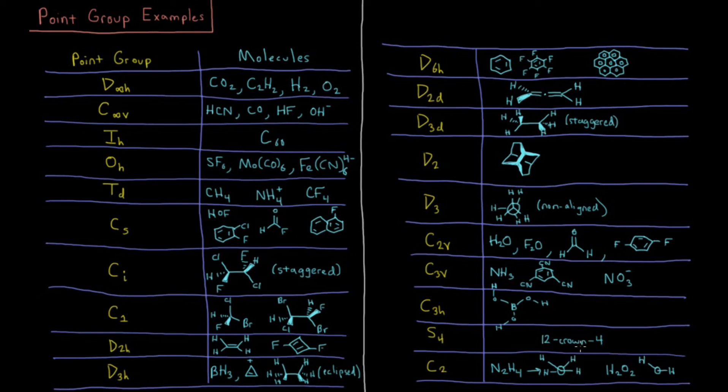Then S6, there's 18-crown-6, a lot of these crown ethers have these SN types of symmetries. They're very weird, you just have to look at them to see it. I can't describe it on paper, and I can't draw it with any kind of justice.